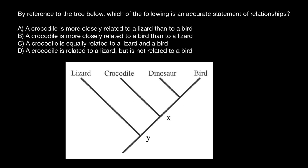We can cross out variant D right away as false, because at point Y all these organisms had a common ancestor.